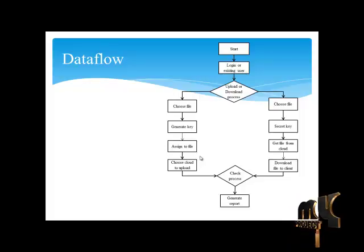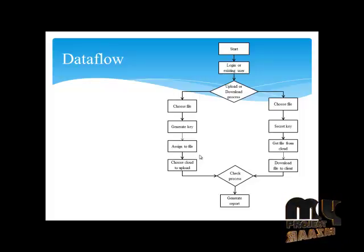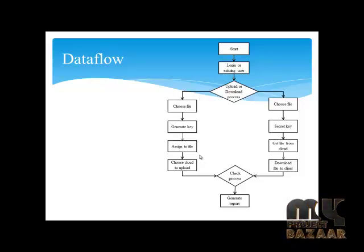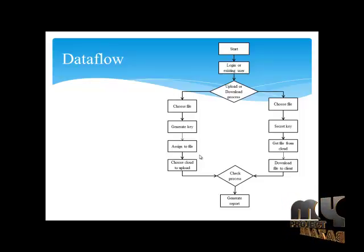The download process should then be done. In the download process, the same file is chosen from the cloud. The user ID and password should be verified. After verifying the user ID and password, the certain key is provided to the related file. After the file and the key are verified in the server database — which contains the details of the user file and key — the secret key is generated to access the file from the cloud and provider access is sent to the users.